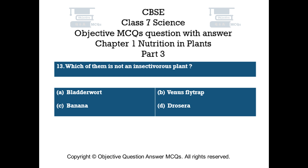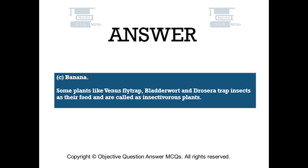Question number 13. Which of them is not an insectivorous plant? Option A: Bladderwort. Option B: Venus flytrap. Option C: Banana. Option D: Drosera. The right answer is option C: Banana. Some plants like Venus flytrap, bladderwort, and Drosera trap insects as their food and are called insectivorous plants.